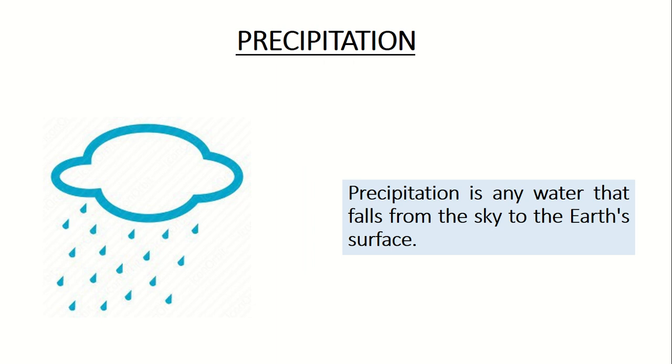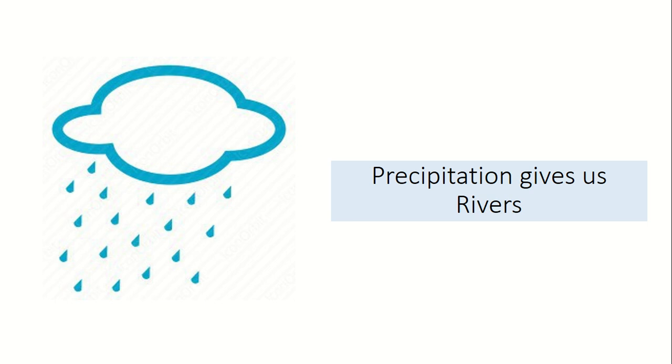And that leads on to the final word here, which is precipitation. Now, precipitation is any water that falls from the sky to the Earth's surface. There's a reason I don't call it rain, and that's because if I was in the Arctic or the tundra biome, for example, it would not fall as rain, it would form as snow or sleet or hail. So precipitation is the more scientific word we need to start using, and that's any water at all that falls from the sky to the Earth's surface. And it's that precipitation that then gives us our rivers, it gives us our water sources.